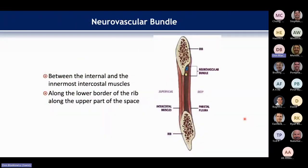Coming right underneath the rib, we have the neurovascular bundle — living in a little divot. There's a vein, an artery, and a nerve. When removing ribs, know they're there and address them before they become a problem.